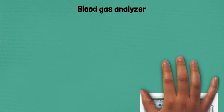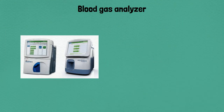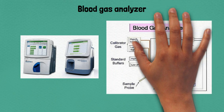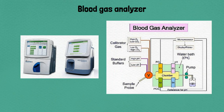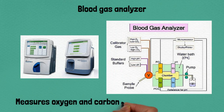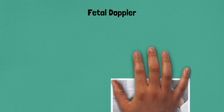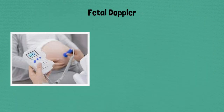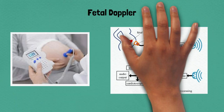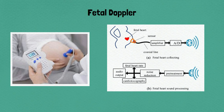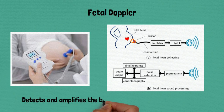Eighty-eight: blood gas analyzer, measures oxygen and carbon dioxide levels in the blood. Eighty-nine: fetal Doppler, detects and amplifies the baby's heartbeat during pregnancy.